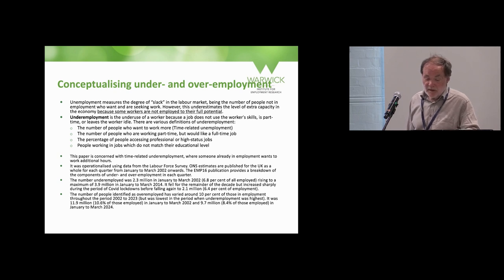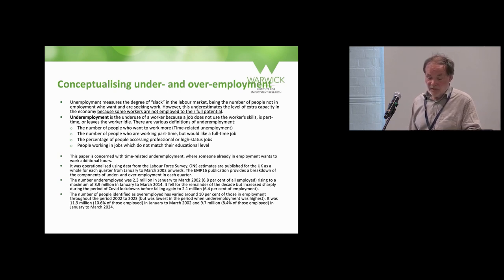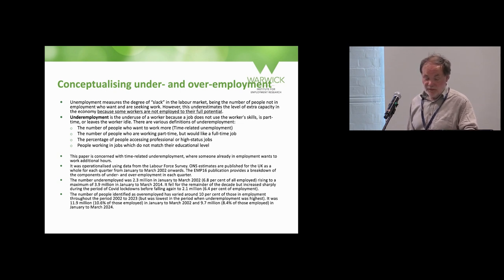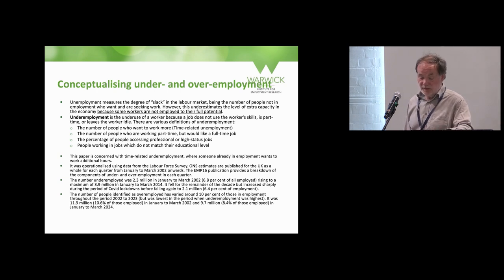The number of underemployed was 2.3 million in January to March 2002, or 6.8% of all those employed. It rose to a maximum of 3.9 million in January to March 2014, then fell, and then increased sharply during the COVID lockdowns. It's now falling to a current level of 2.1 million or 6.4% of employment. In contrast, overemployment is more constant, varying around 10% of those in employment throughout the period, but was lowest when unemployment was highest — 11.9 million in January to March 2002, and 9.7 million or 8.4% in January to March 2024.